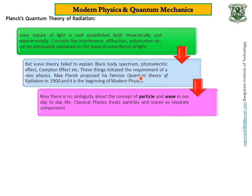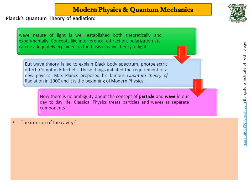Max Planck proposed his famous quantum theory of radiation in 1900 and it is the beginning of modern physics. Now, there is no ambiguity about the concept of particle and wave nature in our day to day life. Classical physics treats particles and waves as separate components. Here comes the Planck's quantum theory. He made two assumptions.